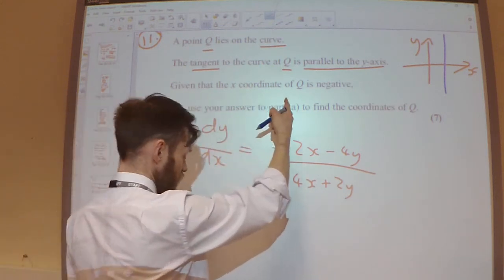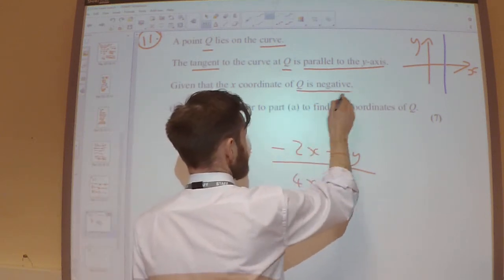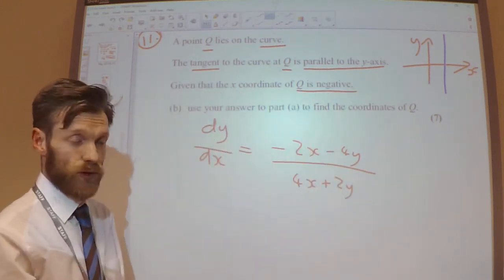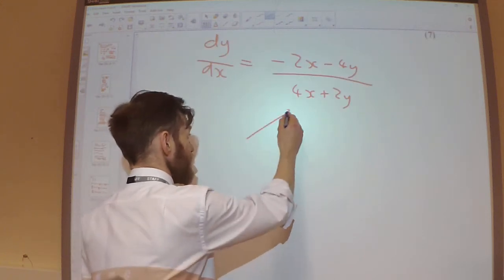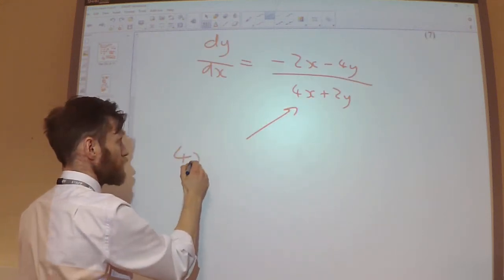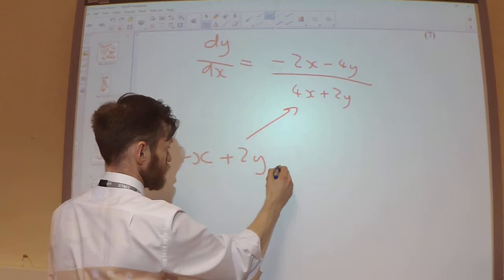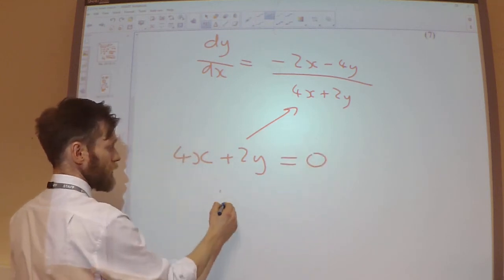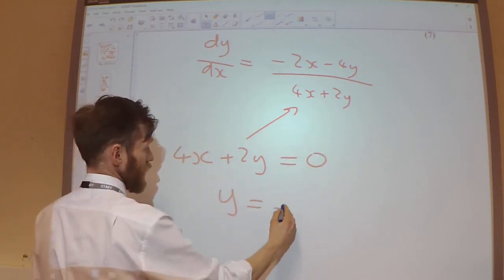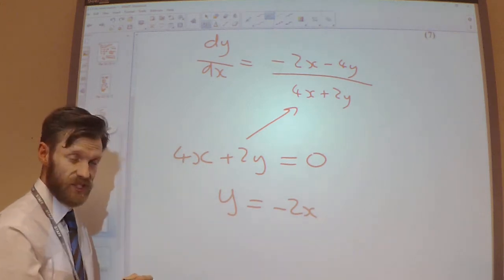Given that the x-coordinate of Q is negative, so x is negative, we need to find the coordinates of Q. As I said, this has to equal zero. So that means that y has got to be equal to minus 2x, just rearranging there.